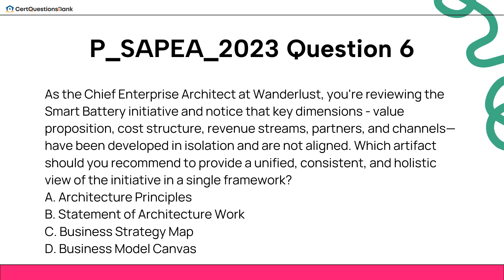As the Chief Enterprise Architect at Wanderlust, you're reviewing the Smart Battery Initiative and notice that key dimensions — value proposition, cost structure, revenue streams, partners, and channels — have been developed in isolation and are not aligned. Which artifact should you recommend to provide a unified, consistent, and holistic view of the initiative in a single framework? A. Architecture principles. B. Statement of architecture work. C. Business strategy map. D. Business model canvas.